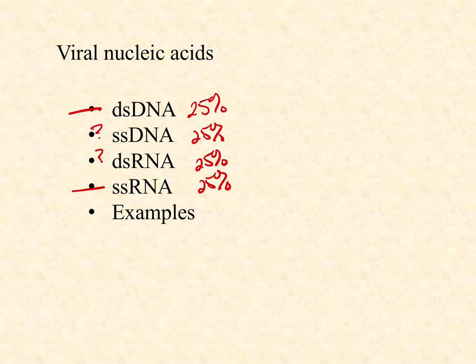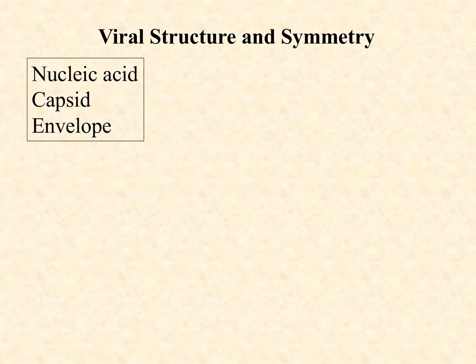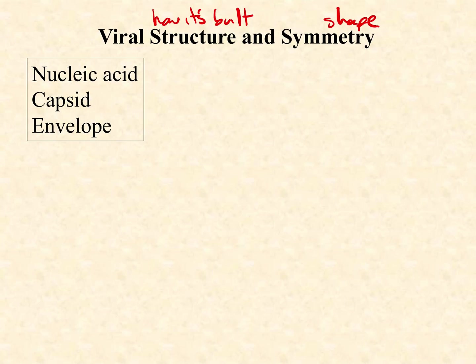We've talked so much this semester about examples of bacteria, and you really don't have many examples of viruses. I want you to start building that database, so keep careful notes on what kinds of viruses are out there, what diseases they cause, and what we know about them. We'll organize viruses based on their nucleic acids. Structure refers to how it's built, and symmetry means shape — we'll get to symmetry soon.